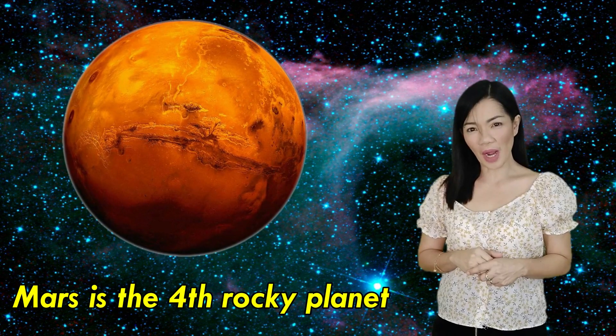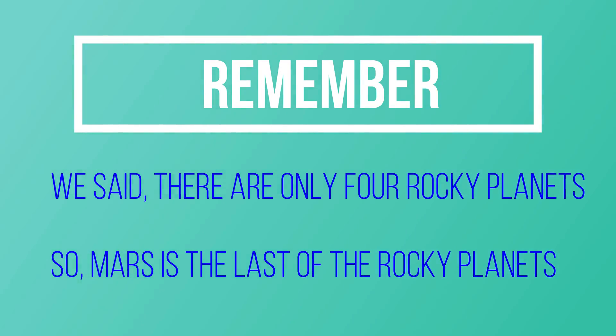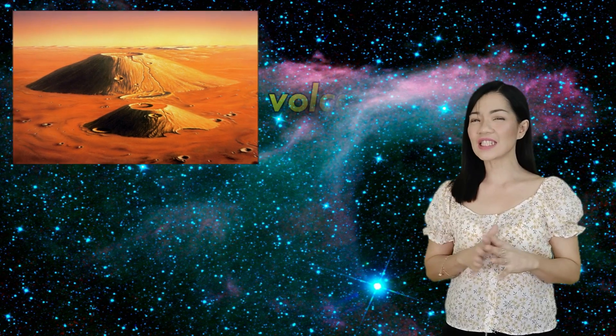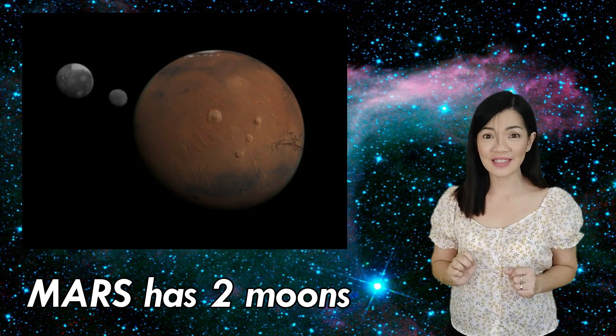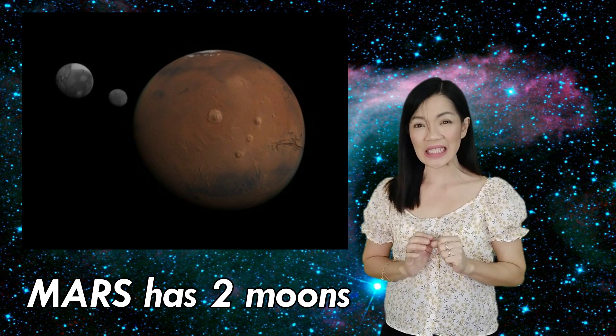Mars is the fourth rocky planet. Remember, we said there are only four rocky planets. So, Mars is the last of the rocky planets. Mars has volcanoes and valleys just like Earth. And this is kinda cool. Mars has two moons. They are both really small.